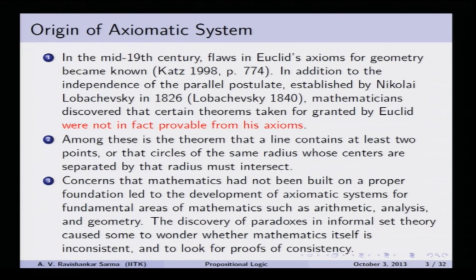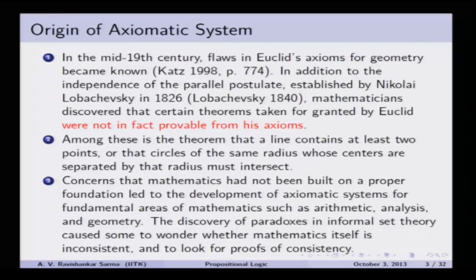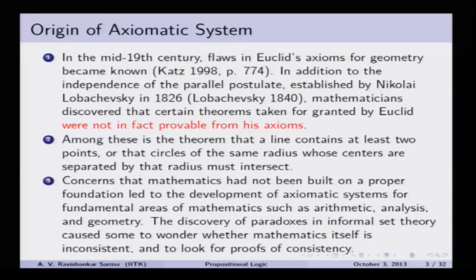Another concern was that mathematics had not been built on proper foundations. Frege built an axiomatic system, but it led to paradoxes. Mathematics was rested on set theory, but set theory was plagued by important paradoxes discovered by Russell and Whitehead, and these paradoxes plagued this kind of axiomatic system. This also led to the development of the rigorous axiomatic system found in Principia Mathematica. Russell and Whitehead's motivation came from paradoxes in Frege's work; set theory was plagued with paradoxes, and these discoveries caused someone to wonder whether mathematics itself is consistent.